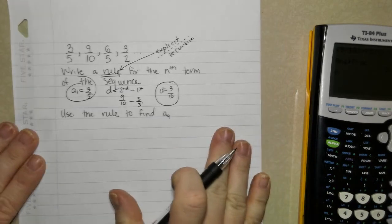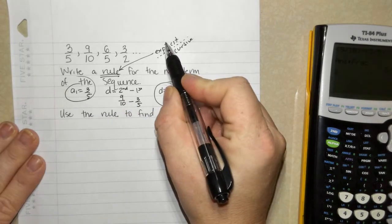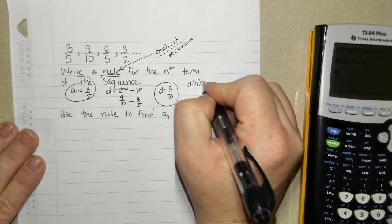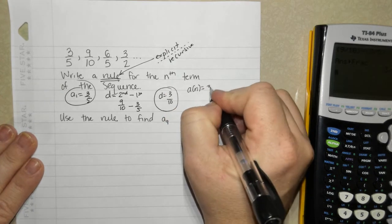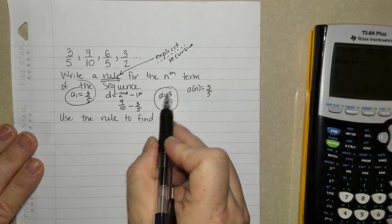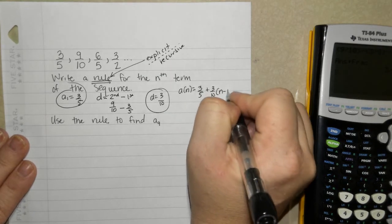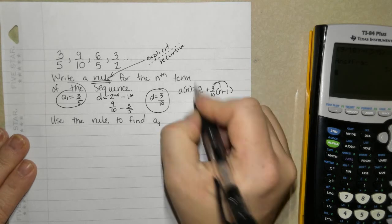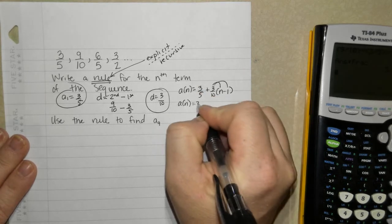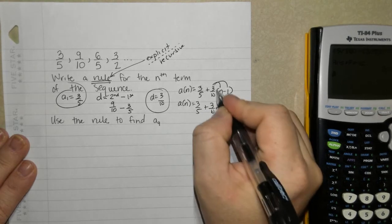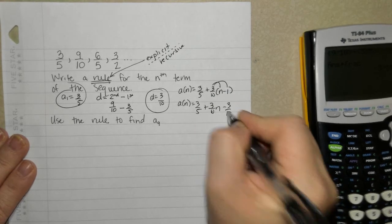Alright. So how do I write this rule, which is an explicit formula? So a of n equals the first term, because this is a positive number, plus the common difference times n minus 1. Then I'm going to distribute through: 3 fifths plus 3 tenths n minus 3 tenths.